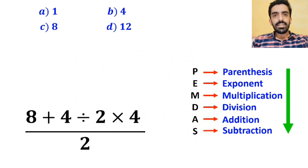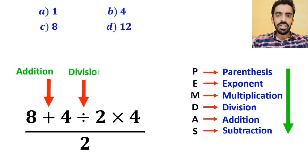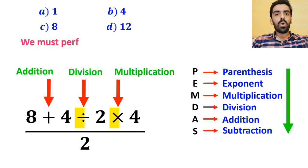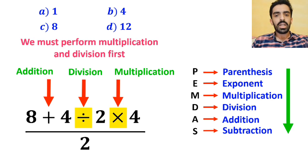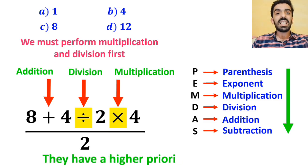As you can see in the image, in the numerator of this fraction we have an addition sign, then a division sign, and finally a multiplication. According to the PEMDAS rule, we must perform multiplication and division first because they have a higher priority than addition.